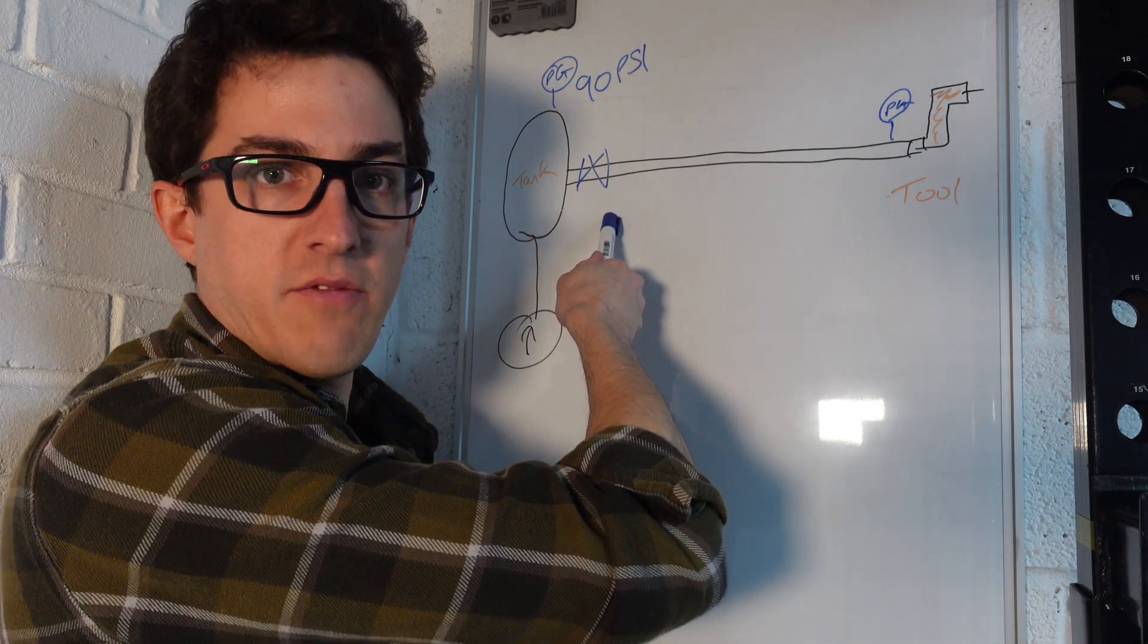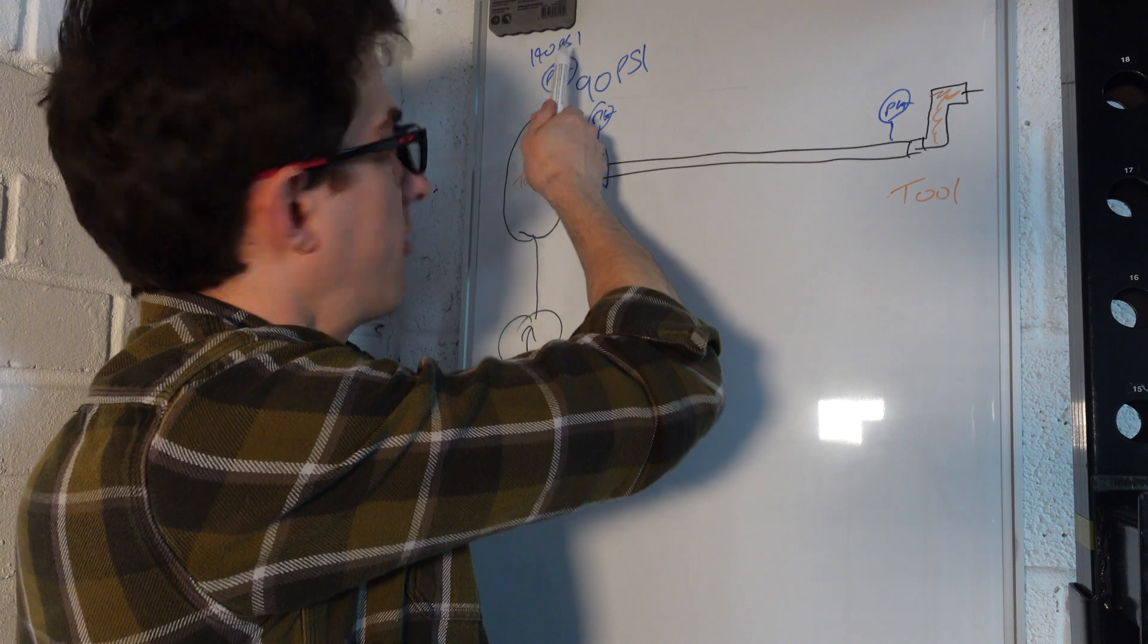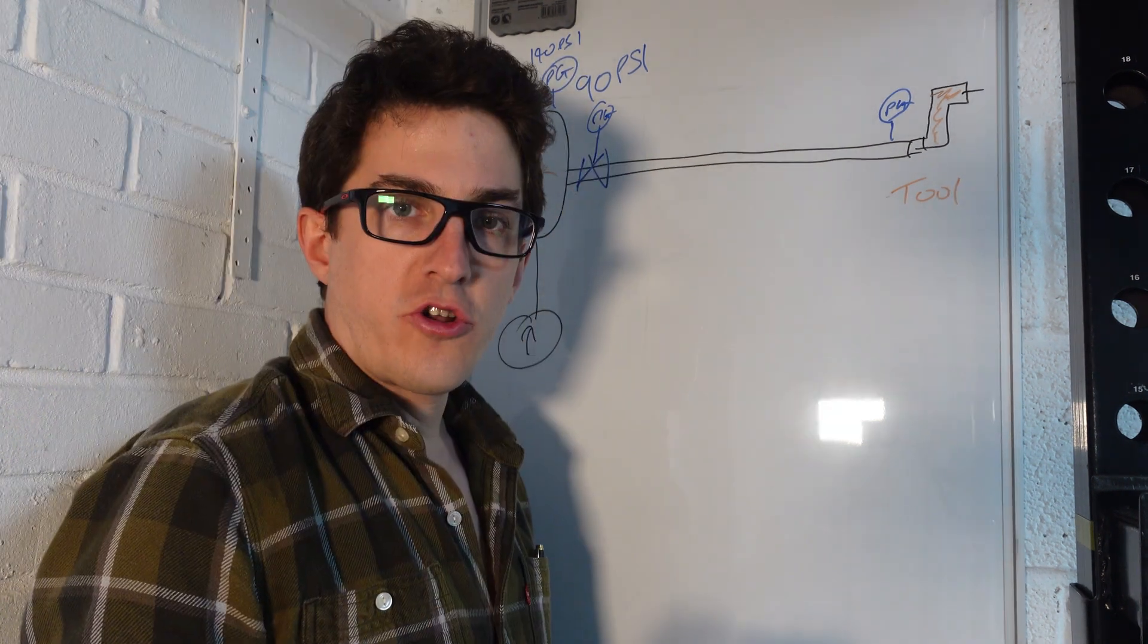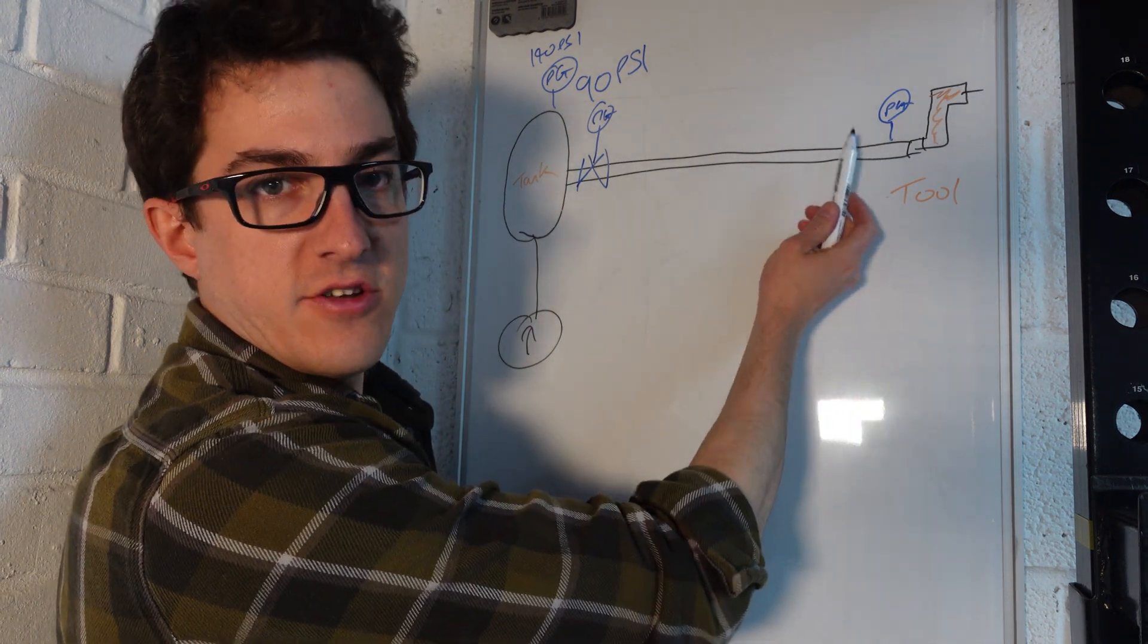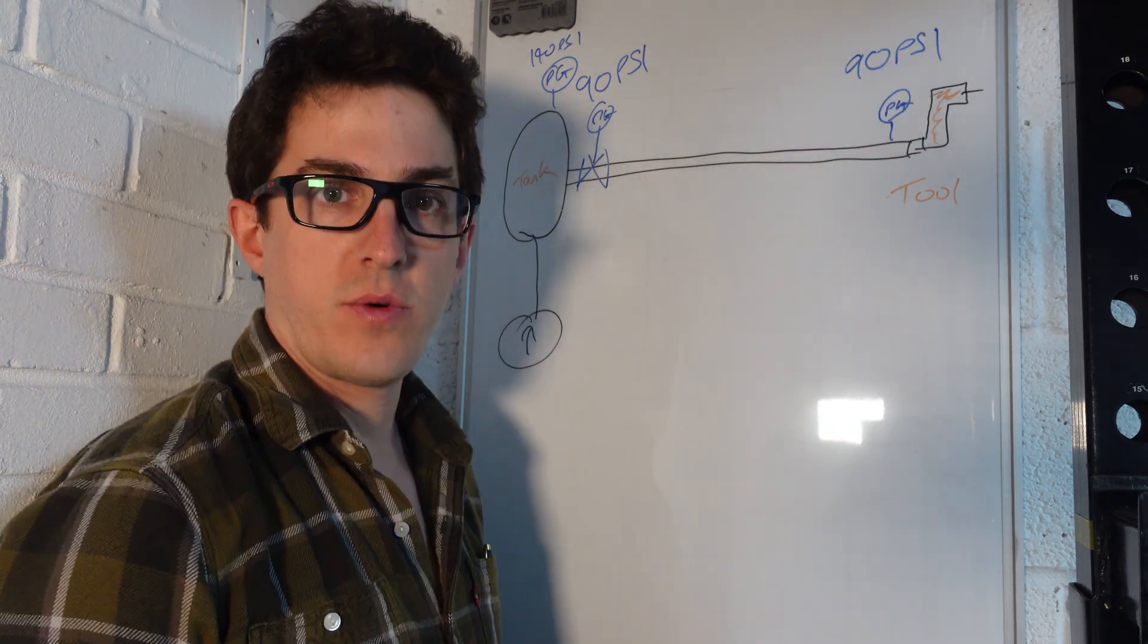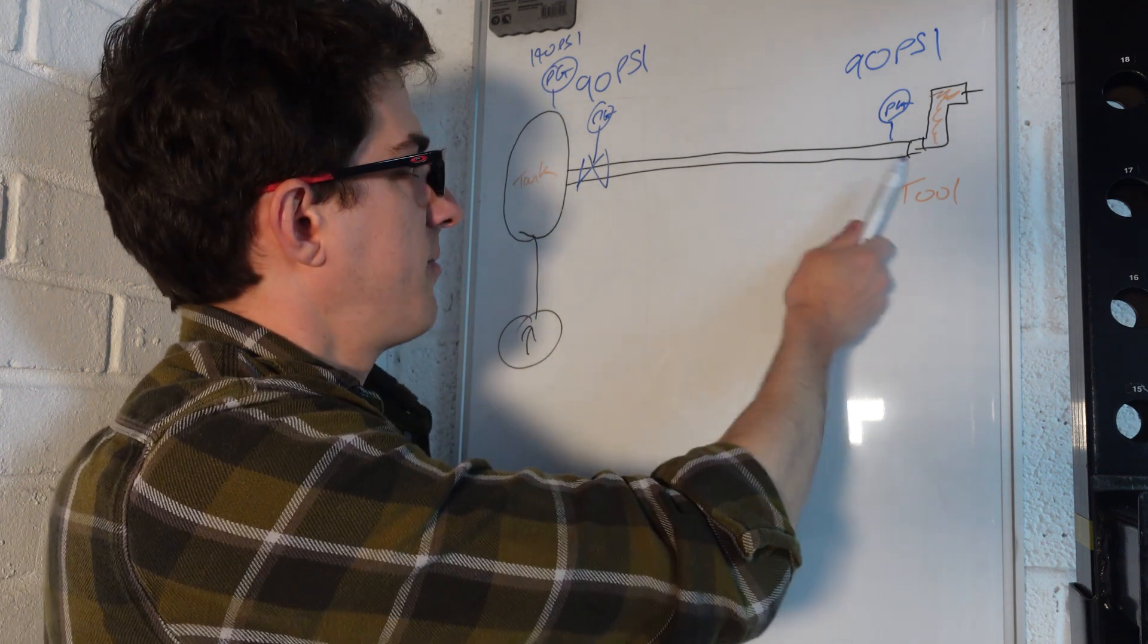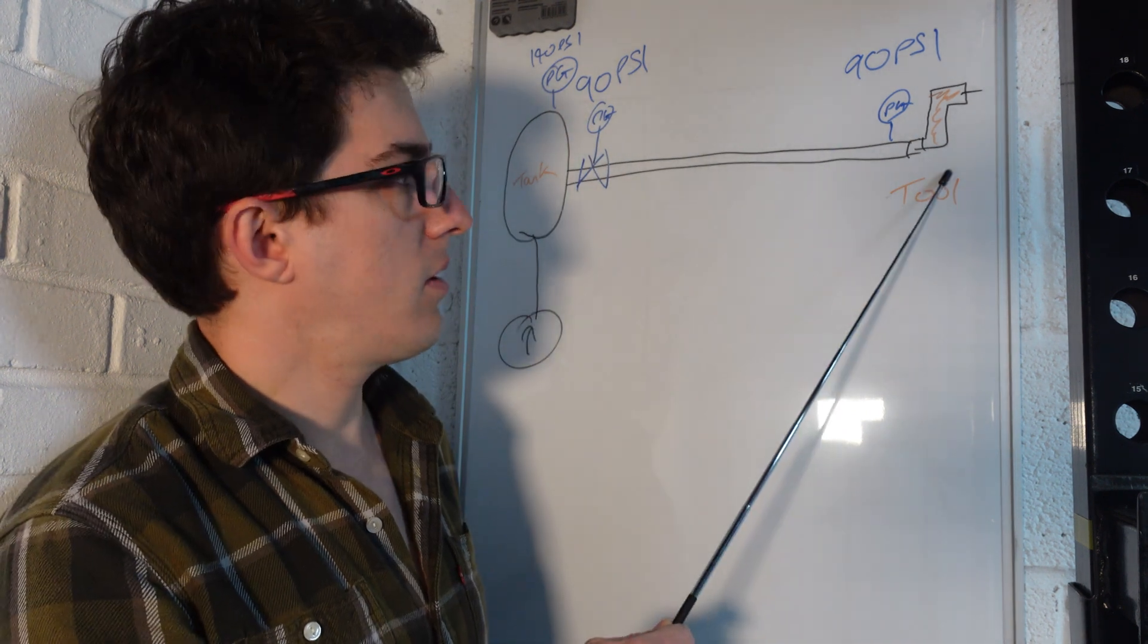Most tools tell you to set the pressure to 90 psi. Most compressors run at higher than 90 psi. Generally speaking, you're going to have a regulator here which you can set this pressure to. Your tank might be 140 psi but here you're setting it to 90 psi. While your tool is turned off, not doing anything, this pressure gauge here is also going to read 90 psi because the pressure is going to be equal all the way along this pipe.